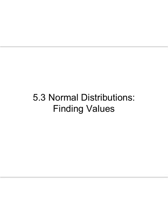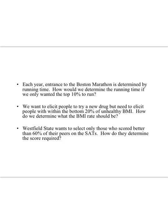Welcome to 5.3, where we're going to be finding values using our z-scores. Each year, entrance to the Boston Marathon is determined by running time. How do you determine the running time if we only want the top 10% to run?